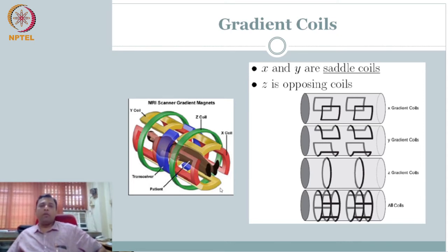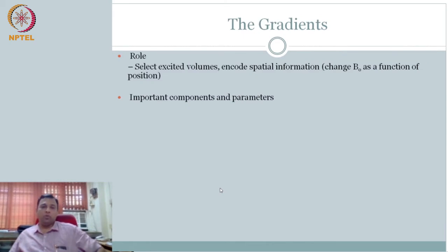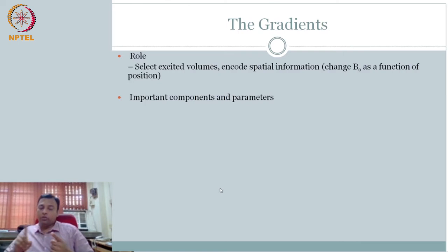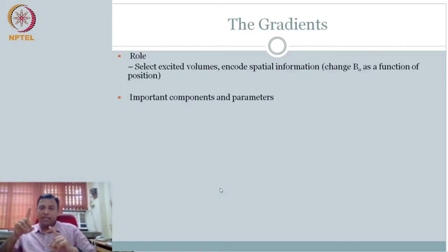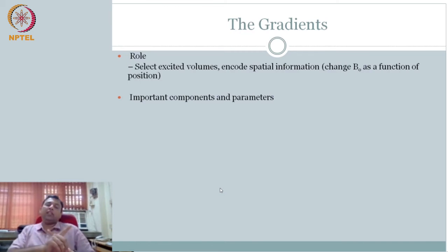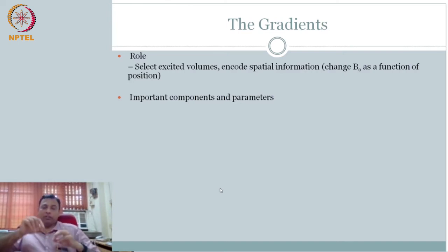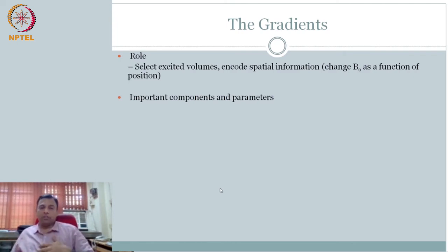What does the gradient do? Its role is to excite selected volumes with a selected frequency. We want the magnetic field strength B-naught to change as a function of position. Different locations should have different field strengths. That is what this tries to accomplish.